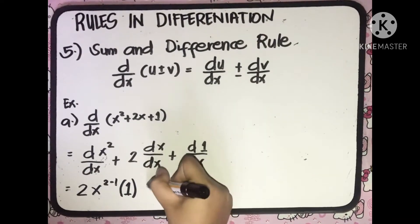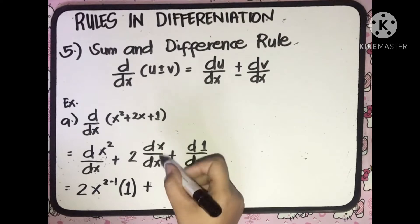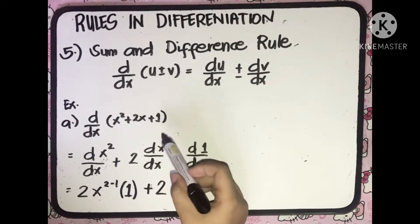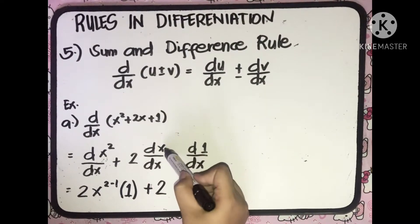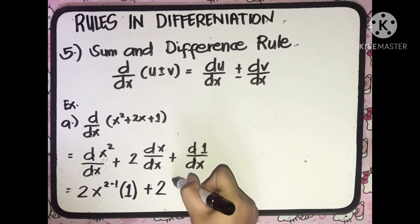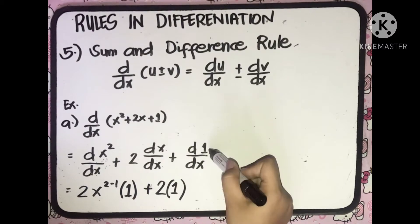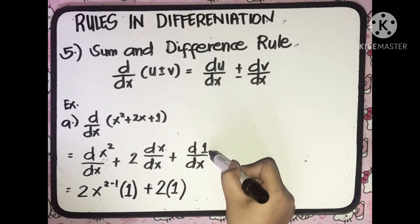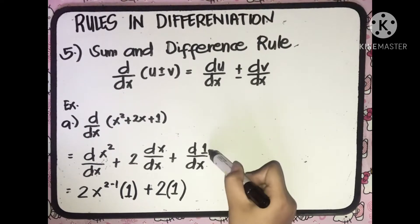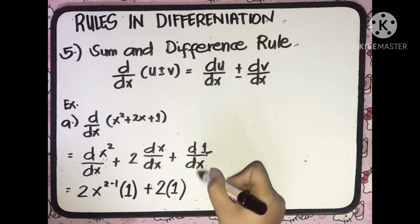For the second term, we have 2 as the constant, so we copy it. The derivative of x with respect to x, according to the second rule, is equal to 1. For the third term, we have the derivative of 1 with respect to x. According to the first rule, the derivative of any constant is equal to 0.